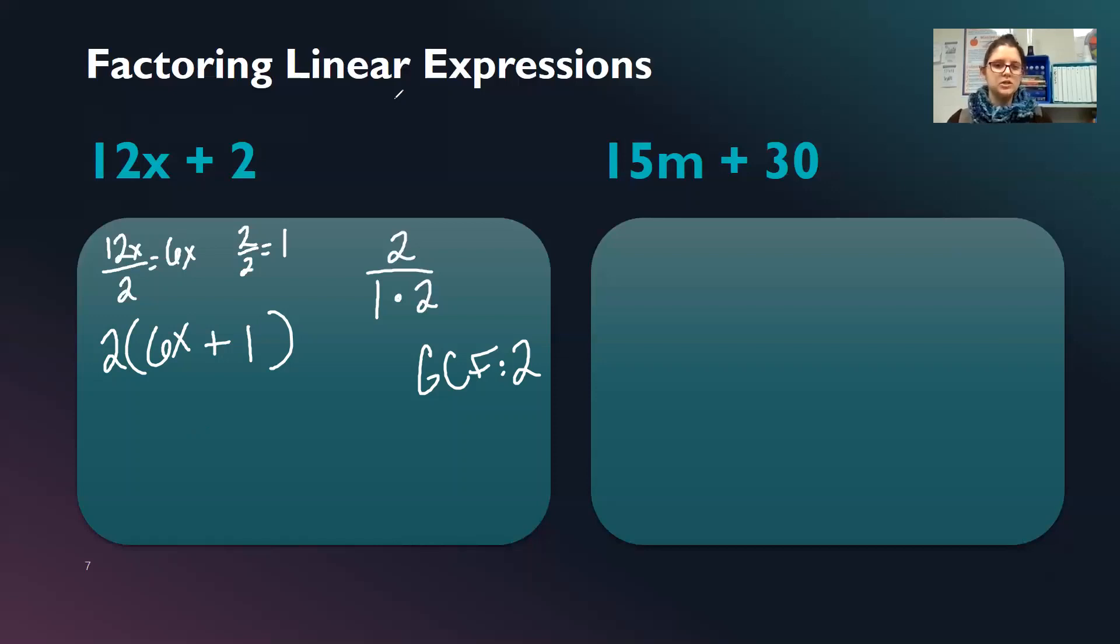And we can always double check our work by using the distributive property. So we can distribute this 2 to the 6x and to the 1. 2 times 6x is 12x. 2 times 1 is 2. And we got what we started with.